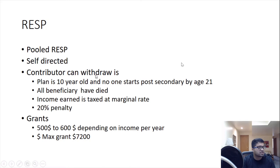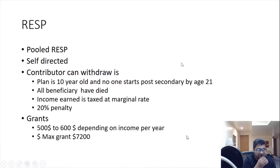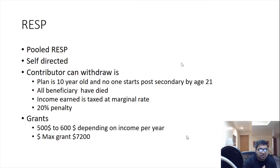Pooled Registered Pension Plans are available in certain provinces, started by the federal government for those areas. The RESP — Registered Education Savings Plan — is used to save for a child's education; it cannot be used for your own education. Contributions can be withdrawn if the plan is at least 10 years old and no beneficiary is pursuing post-secondary education; withdrawn income is taxed at marginal rate plus a 20% penalty. The government also provides a Canada Education Savings Grant (CESG): approximately $600 for families with income under $45,000, $550 for income between $45,000–$90,000, and $500 for income above $90,000, with a lifetime maximum grant of $7,200.